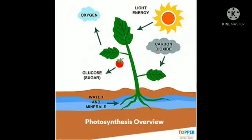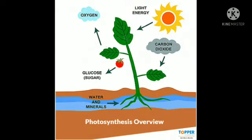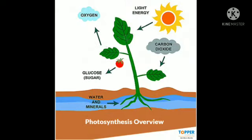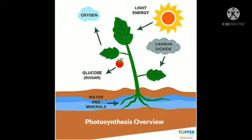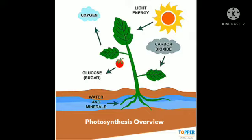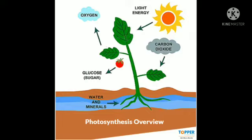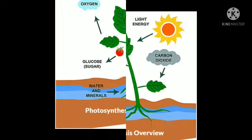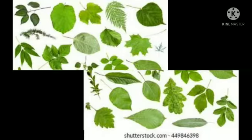Plants prepare their food through the process called photosynthesis. Plants make food with the help of sunlight, carbon dioxide, water, and chlorophyll.